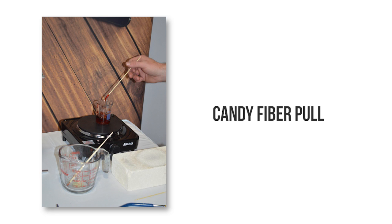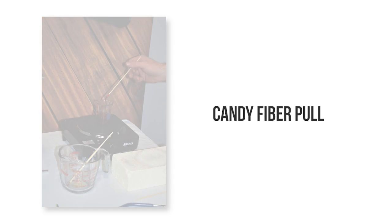During this demo, Jolly Ranchers will be melted in a beaker using a hot plate. Once the Jolly Ranchers have reached a molten state, candy fibers can be pulled from the beaker, which simulates the production of glass-like fibers.